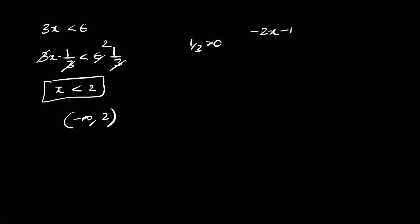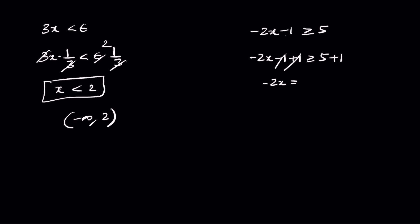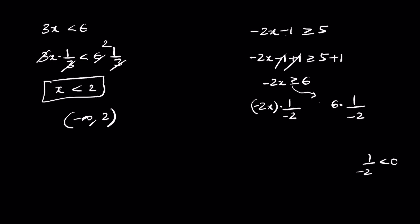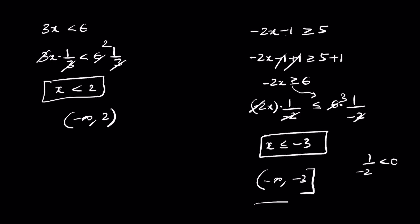Let's try minus 2x minus 1 greater than or equal to 5. First, add 1 on both sides: minus 2x minus 1 plus 1 greater than or equal to 5 plus 1, giving minus 2x greater than or equal to 6. Now divide by minus 2 — since 1 divided by minus 2 is less than 0, we must change the sign from greater than or equal to, to less than or equal to. So x less than or equal to negative 3. In interval notation: negative infinity comma negative 3 closed interval.